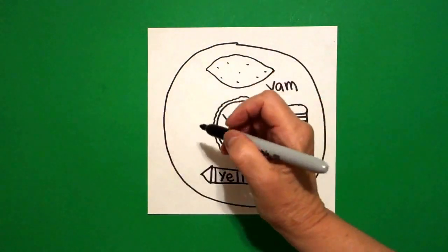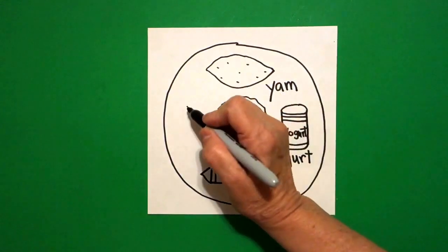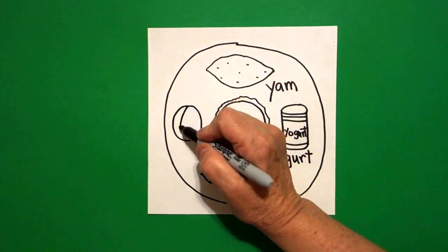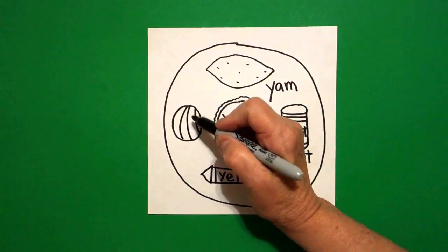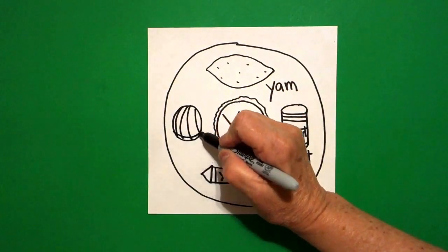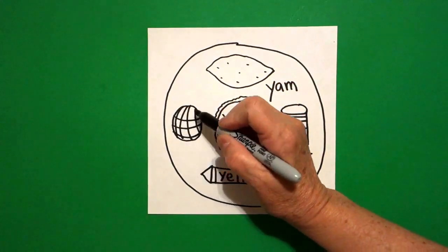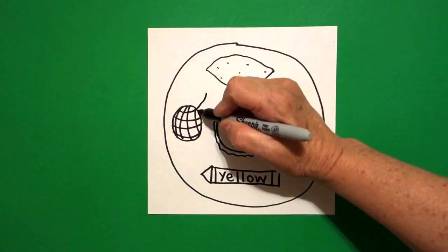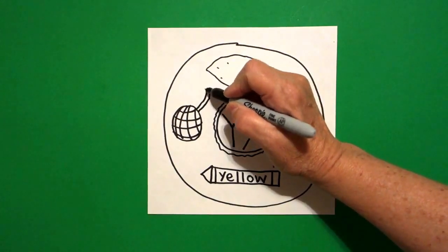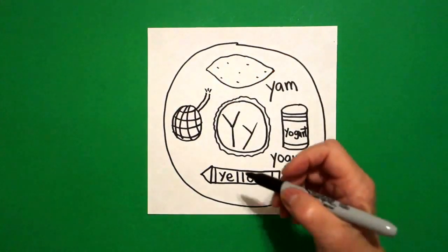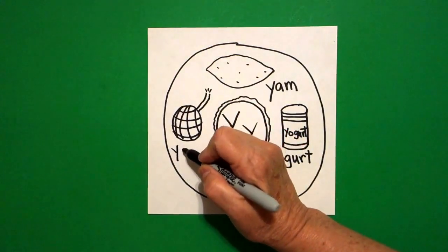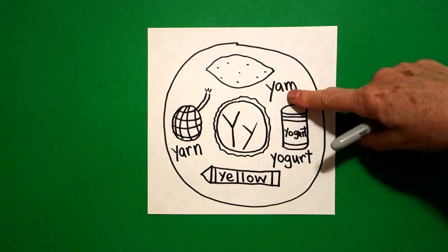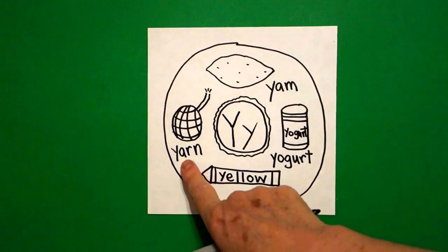Now I come all the way over to the left, put a dot, and I'm going to draw a circle. And inside the circle I'm going to draw curved lines going down. And then I'm going to draw curved lines going across. Right where I stop here I draw a little curved line up, curved line up, one, two, three little straight lines. This is a ball of yarn. Y-A-R-N. So we have yam, yogurt, yellow, yarn.